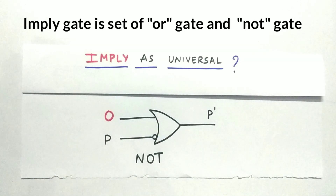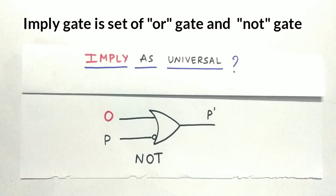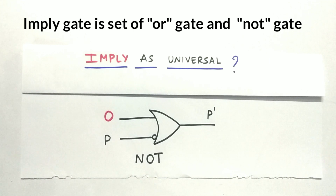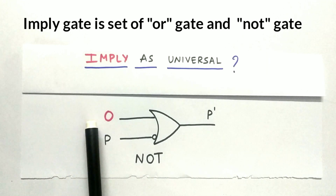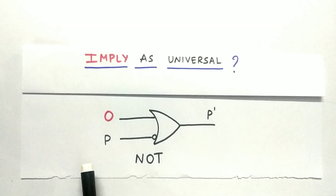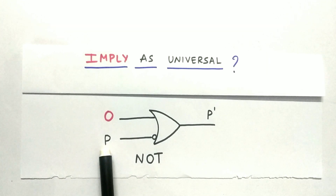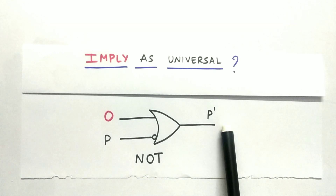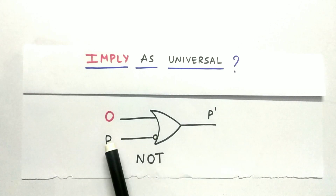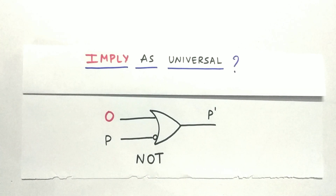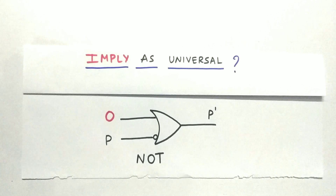The first operation we are performing is a NOT operation. Here we are giving one input as 0 and the other input as P, and we are able to get the complement of that input. So the implied gate can act as a NOT gate.